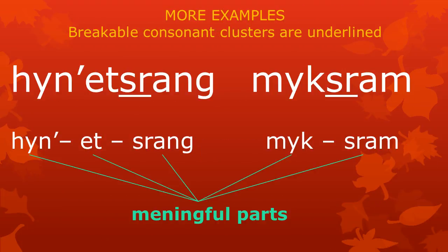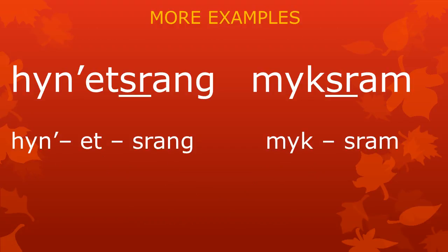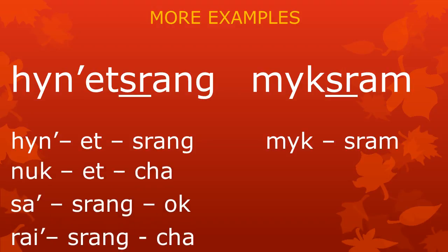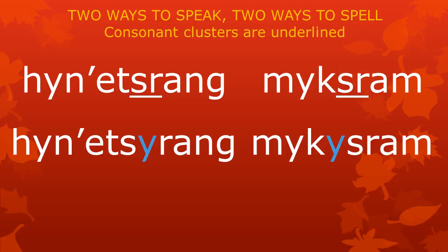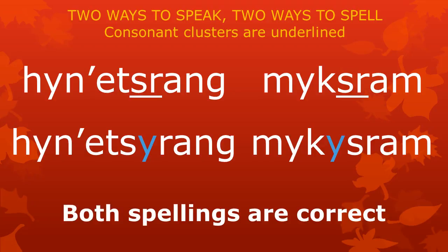Here we see some more examples of clusters that can be broken up — they are underlined. The cluster SR appears in the words HUNETSRANG and MKSRAM. The word HUNETSRANG has the meaningful parts HUN, ET, and SRAM. These parts can also be used in other words, like NUKETSHA, SASRANGOK, and RAYSRANGSHA. The meaningful parts in MKSRAM can make other words like MKSUWA and MKSDAO. Don't worry that the meaning of SRAM in MKSRAM is not very clear — it is a meaningful part only used in combination with MKS. HUNETSRANG and MKSRAM can also be pronounced HUNETSERAM and MKSERAM. Two ways to speak, two ways to spell — both spellings are correct.